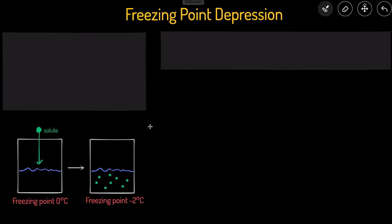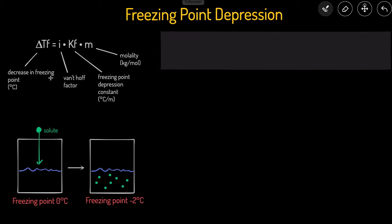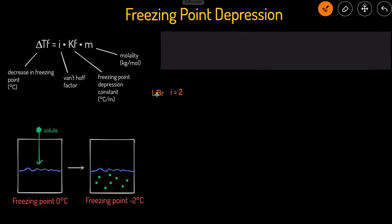The equation associated with freezing point depression is: change in the temperature of the freezing point, delta Tf — where F means freezing — is equal to i times Kf times m. i is the Van't Hoff factor, and that's just how many particles the solute will break up into. For example, if you're working with something like LiBr, that's going to break up into Li+ and Br−. So in this case, the i value will be two, because this ionic compound will break up.